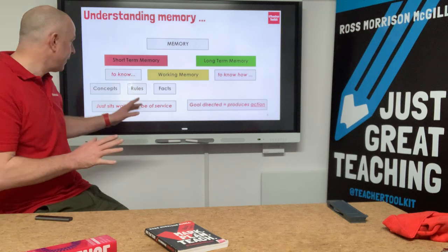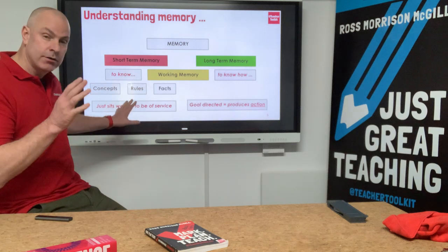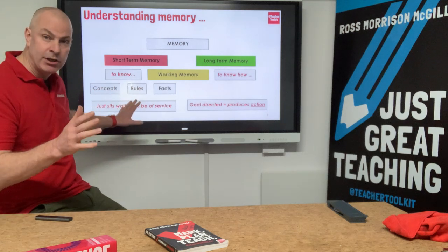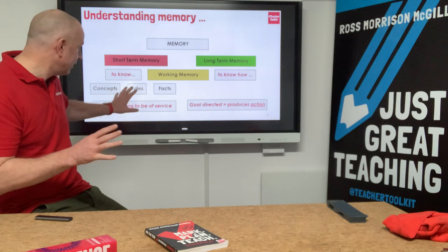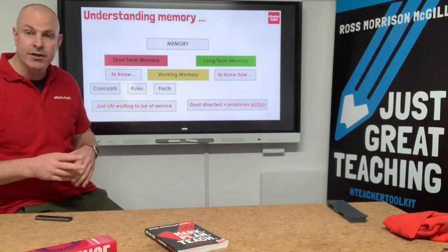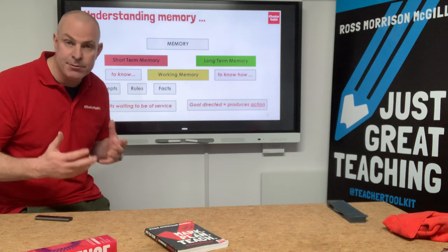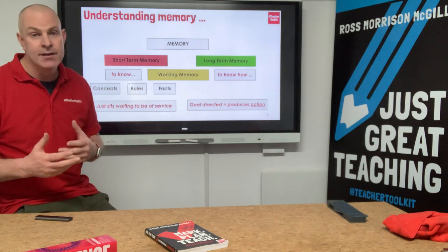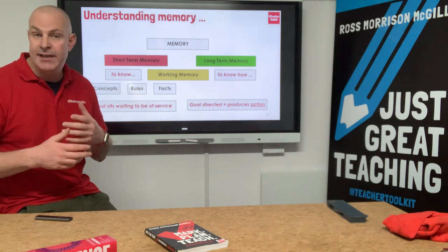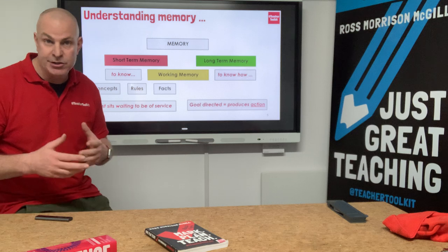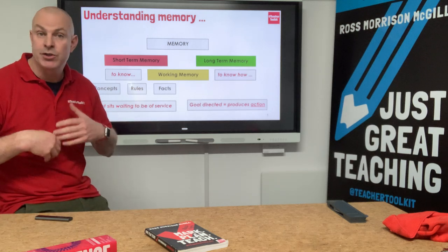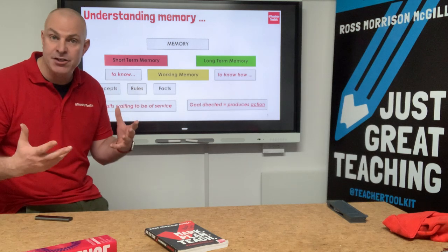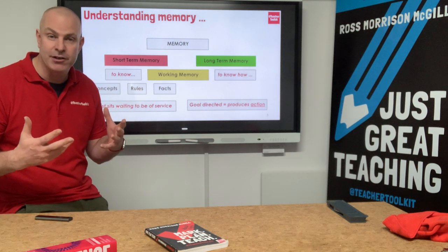It's a brief summary. We've got procedural knowledge and declarative knowledge. Declarative is where we are storing concepts, rules, and facts. And when we say two plus two, we turn that into four — we turn it into an action, procedural knowledge.